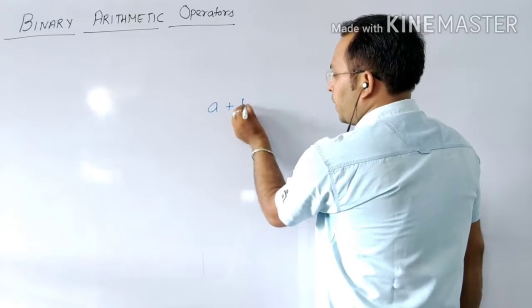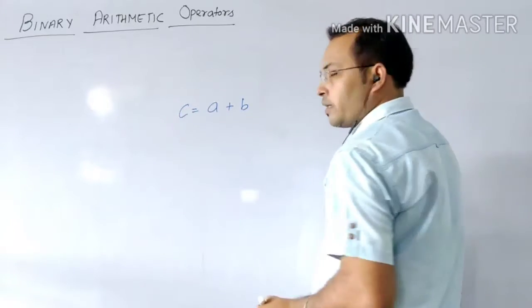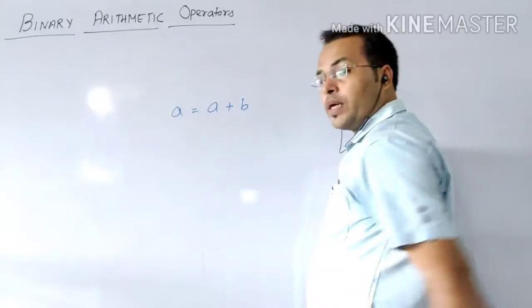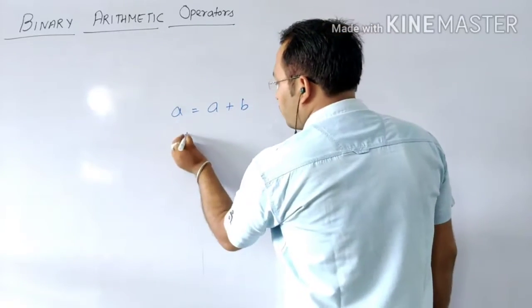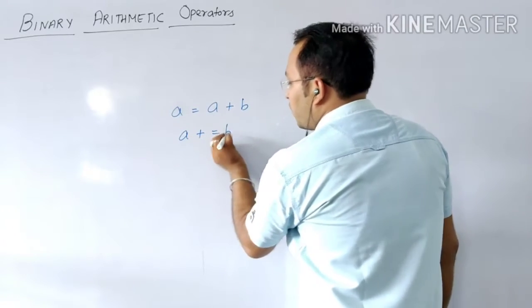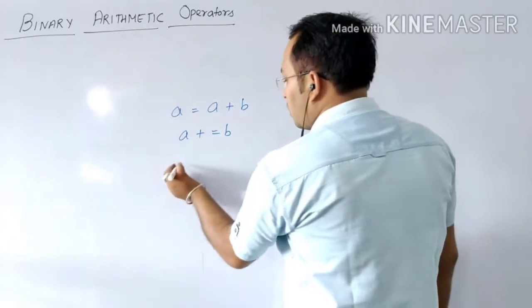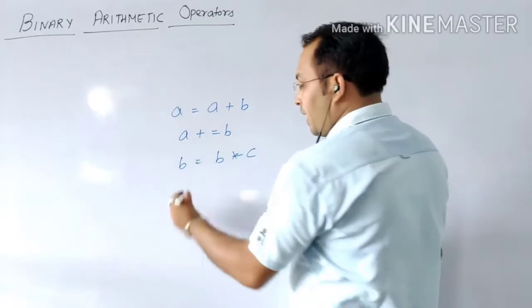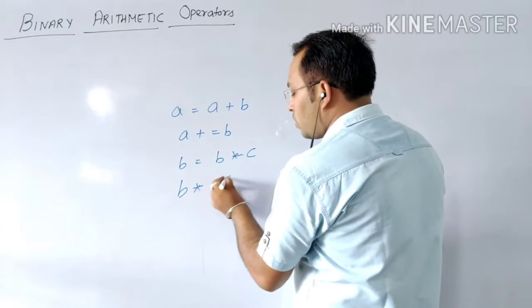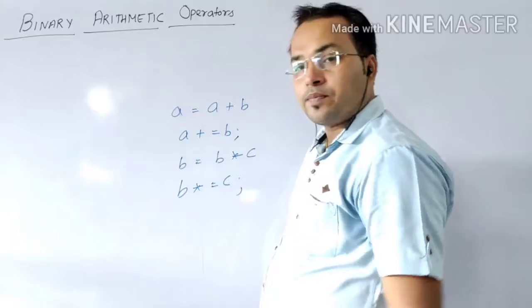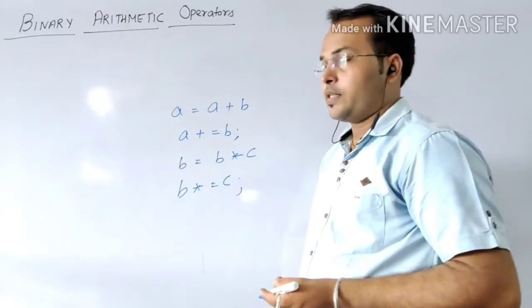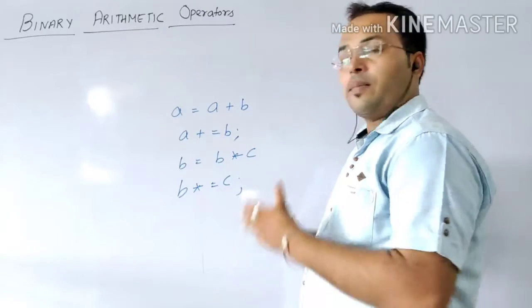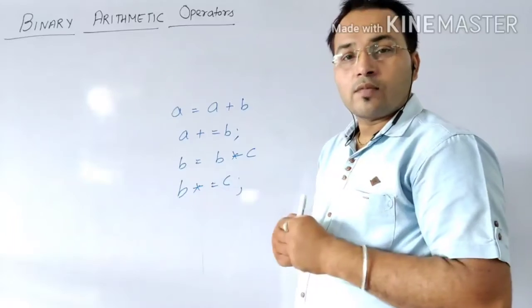But I will give you a small list of that. If a equals to a plus b like this is written, so the short form of this, a plus equals to b, you can write. Or suppose b equals to b into c is there, then in that case, b into equals to c, you can use this way. So this is the use of Shorthand Operators, and whatever the examples are given in the book, you have to solve by your own, and the method is same what I had explained in the previous video lecture.